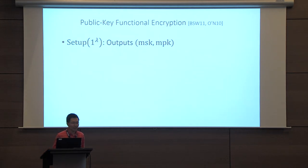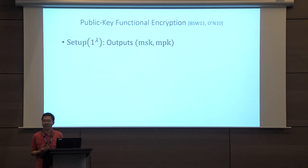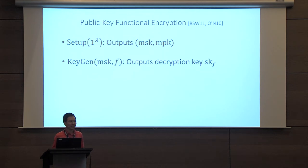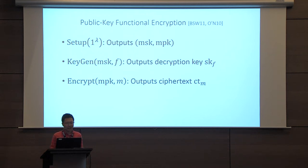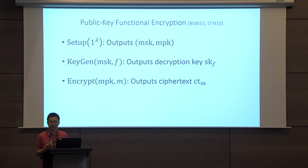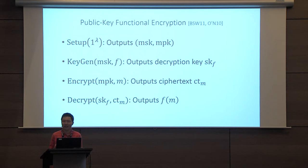More formally, a functional encryption scheme in a public key setting consists of four algorithms. There's a setup algorithm that on input the security parameter outputs a secret key and public key. There's a key generation algorithm that takes a secret key and a description of a function F and produces a function key. There's an encryption algorithm that takes a message M and a public key and produces a ciphertext. And finally, there's a decryption function that takes a secret key for a function F and a message, and outputs F of M.